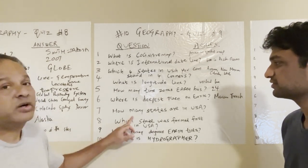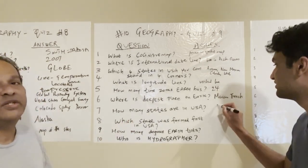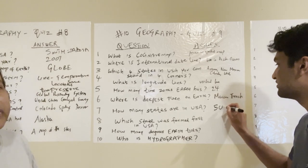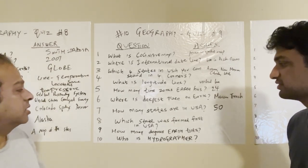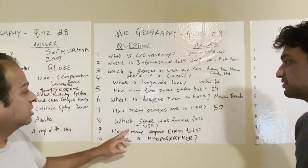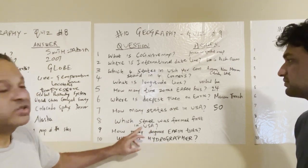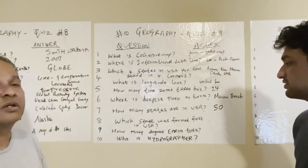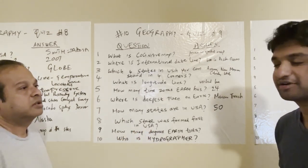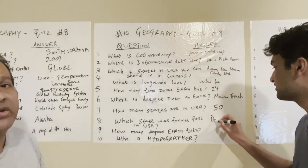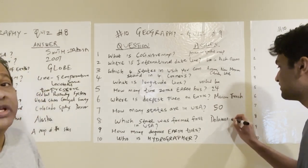How many states are in the USA? 50. There are 50 states in the USA — there are some islands but that's different. Which state was formed first in the USA? Delaware. It happened in Delaware — that's the first state in the USA out of the 50 states.